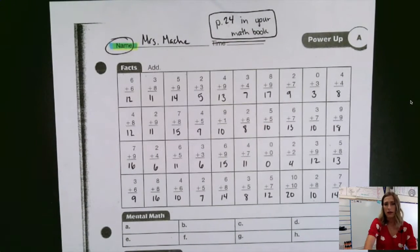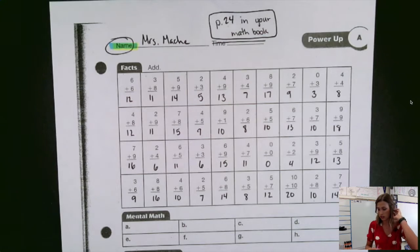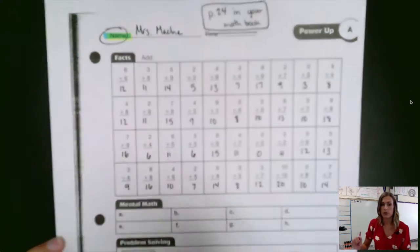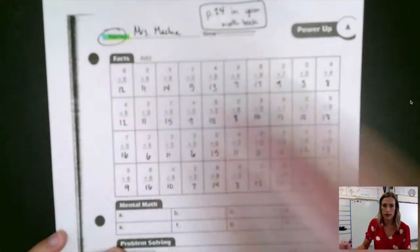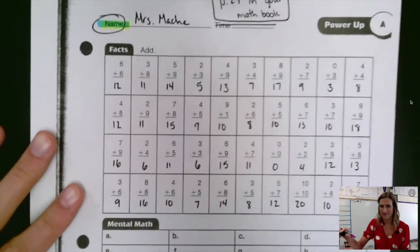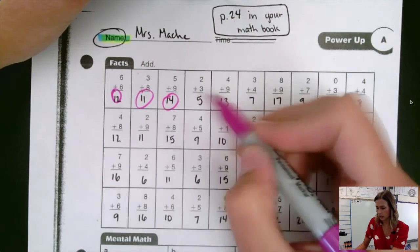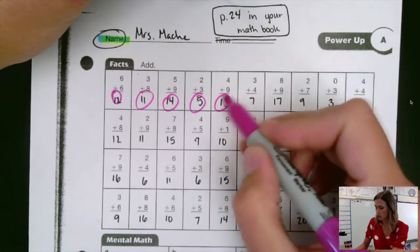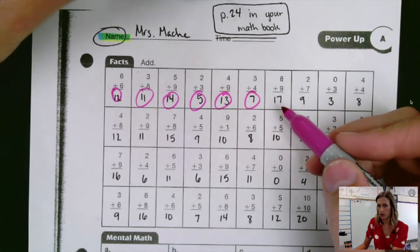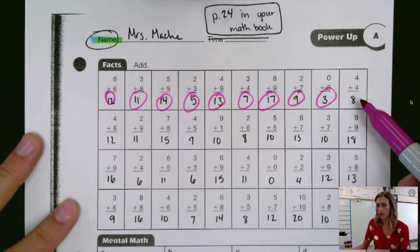All right, thanks for working so hard on those power-ups, guys. When we keep doing these power-ups, they really help us get faster at our math facts, get faster at doing things in our head, so that when you do your written practice, numbers one through thirty, that gets a lot faster and easier. Circle the ones that we get right. When you get it wrong, just cross it out, write the right answer right next to it. Here we go. Six plus six is twelve. Three plus eight is eleven. Five plus nine is fourteen. Two plus three is five. Four plus nine is thirteen. Three plus four is seven. Eight plus nine is seventeen. Two plus seven is nine. Zero plus three is three. Four plus four is eight.